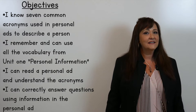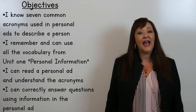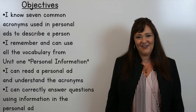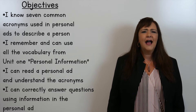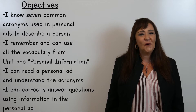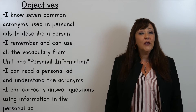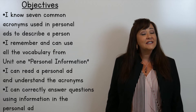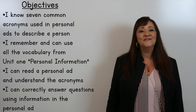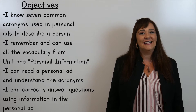The first objective says: I know seven common acronyms used in personal ads to describe a person. We'll talk about what an acronym is later. The second objective says: I remember and can use all of the vocabulary from unit one personal information. The third objective says: I can read a personal ad and understand the acronyms. And the fourth and final objective says: I can correctly answer questions using information in the personal ad.